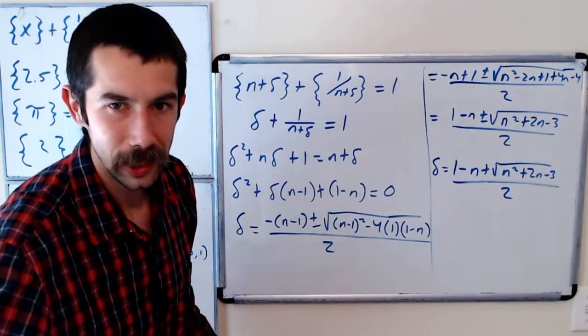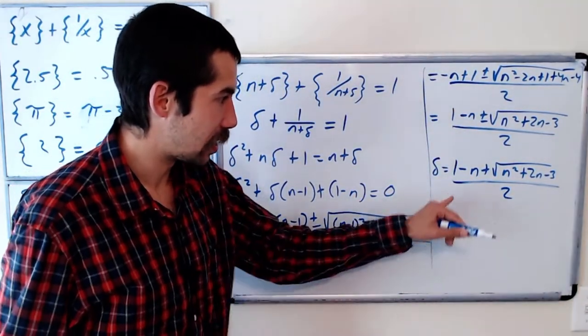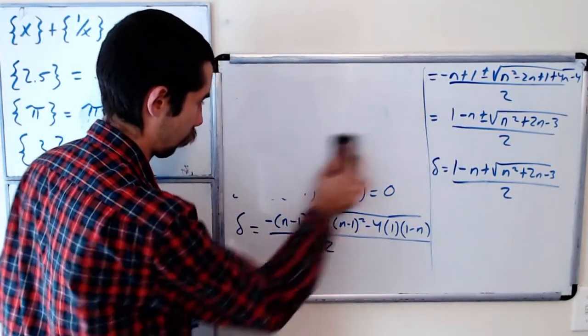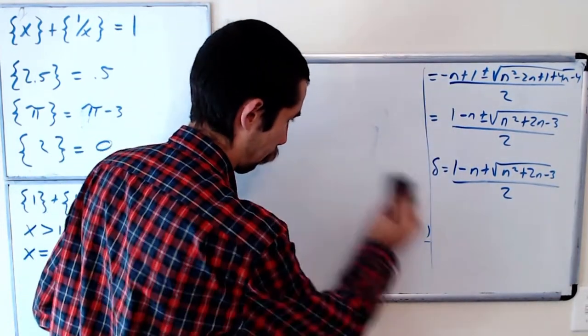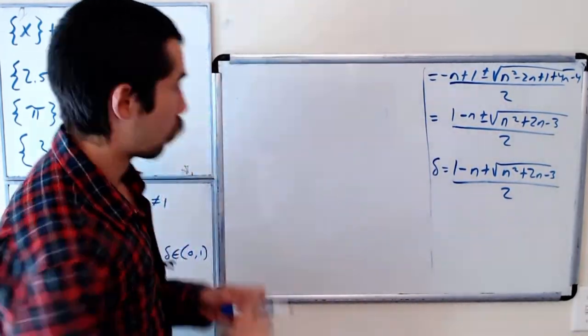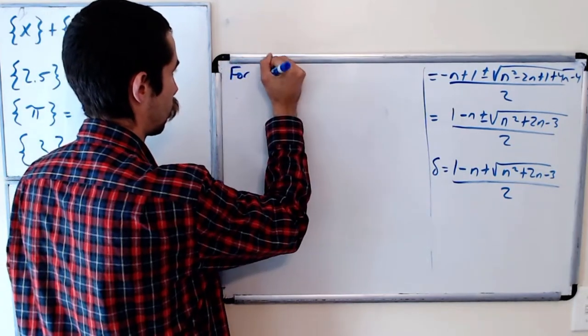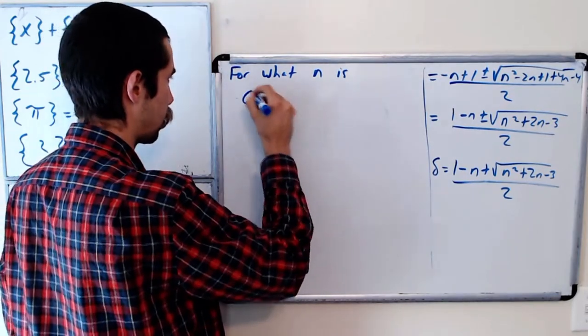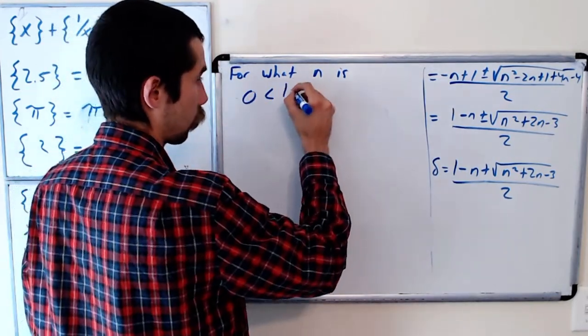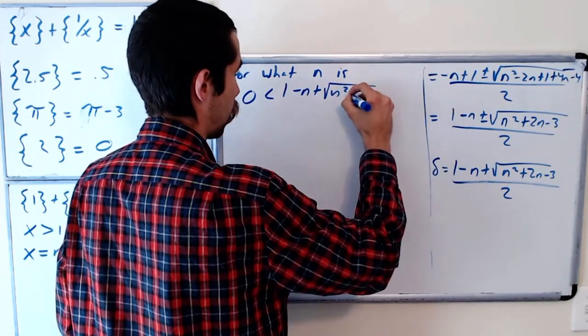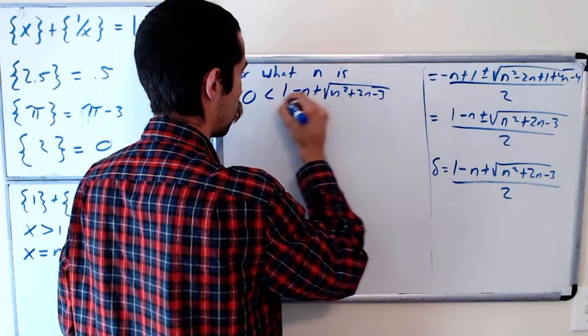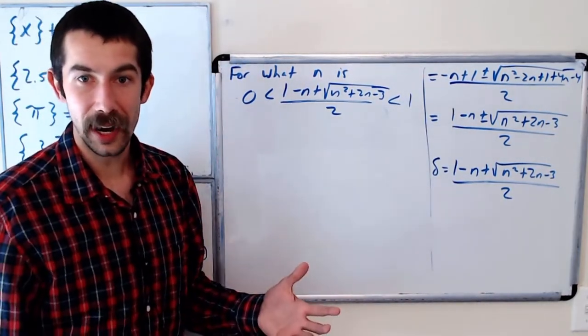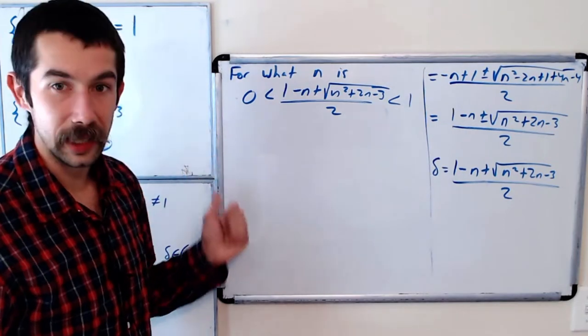And so now the question is for what n is this between 0 and 1? Okay so for what n is 0 less than 1 minus n plus root n squared plus 2n minus 3 over 2 less than 1. When we find those n's those are going to be the values that we could use to get x.